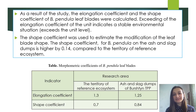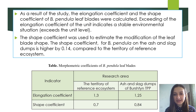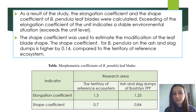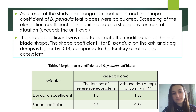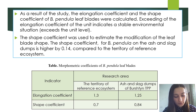As a result of the study, the elongation coefficient and the shape coefficient of Betula pendula leaf blades were calculated. Exceeding the elongation coefficient of one indicates a stable environment. The shape coefficient was used to estimate the modification of the leaf blade shape. The shape coefficient for Betula pendula on the ash and slack dumps is higher by 0.14 compared to the territory of the reference ecosystem.